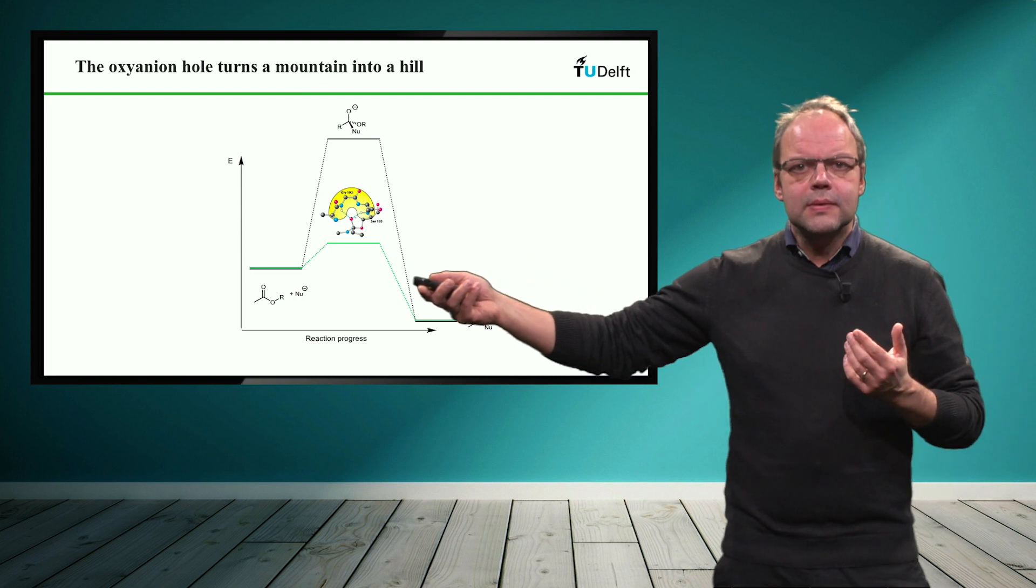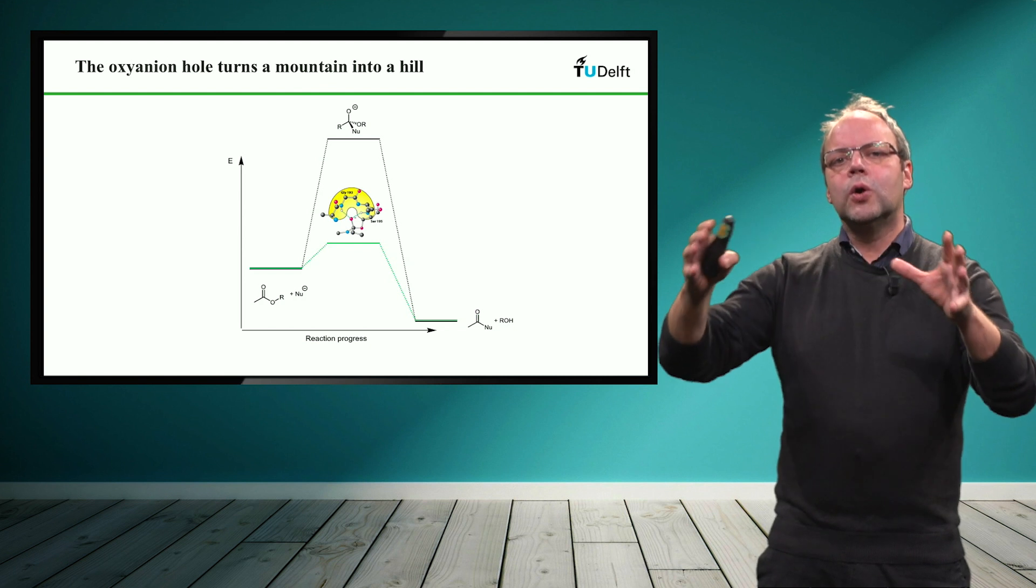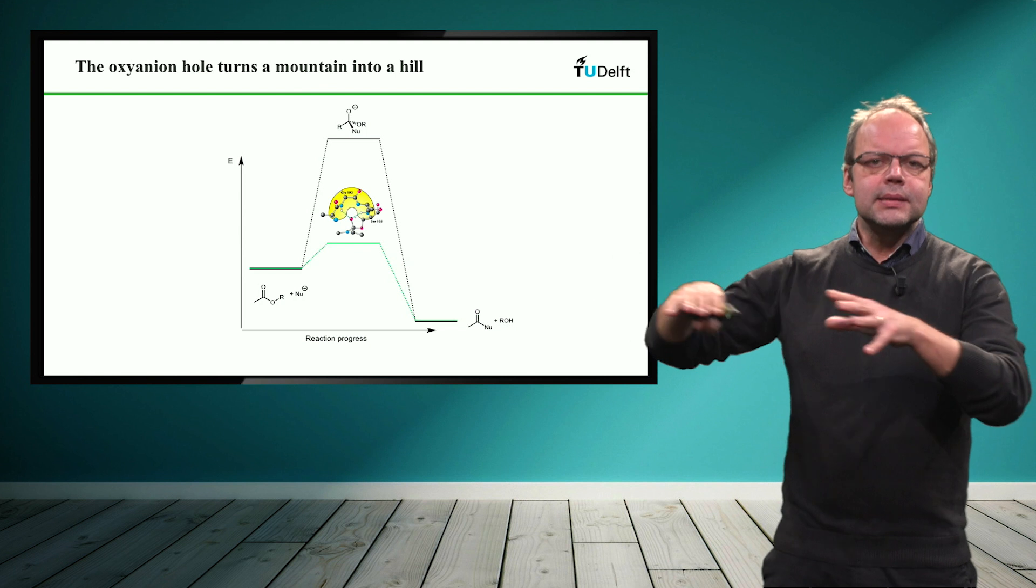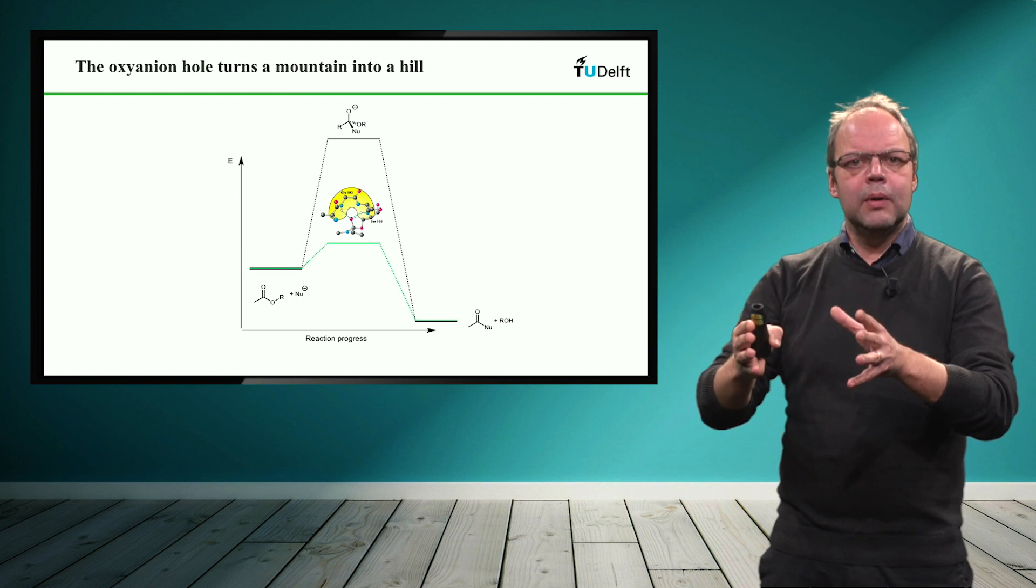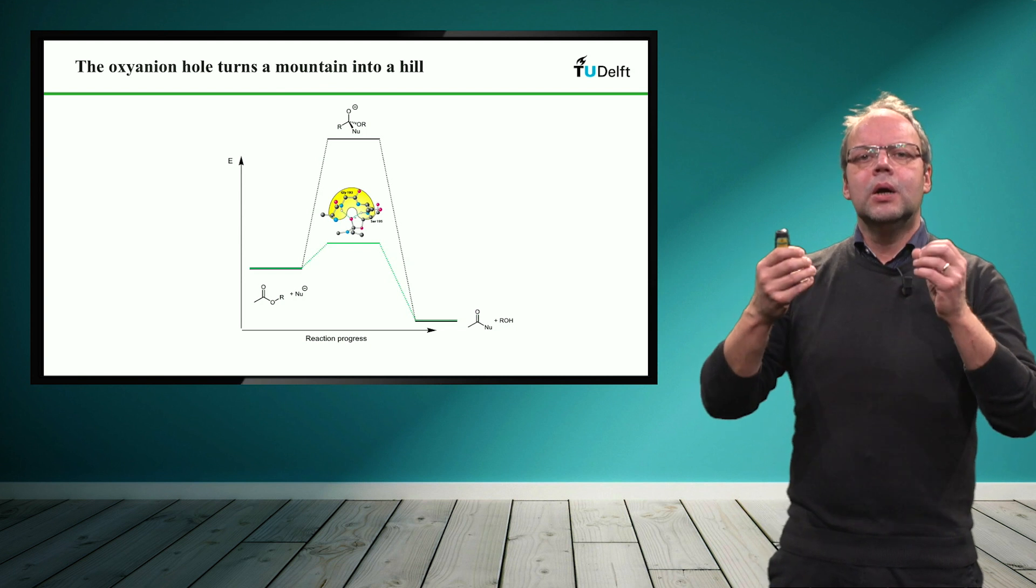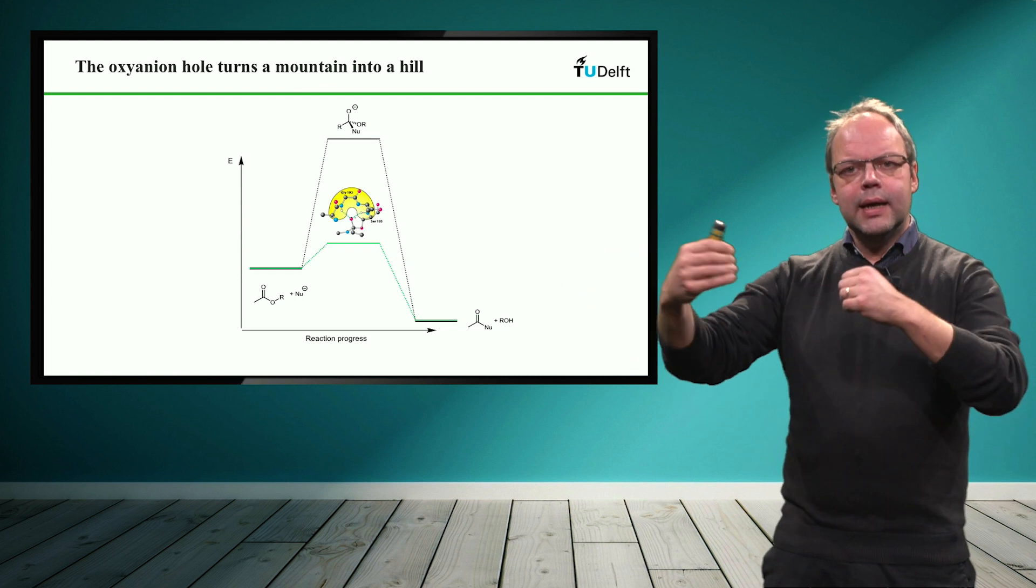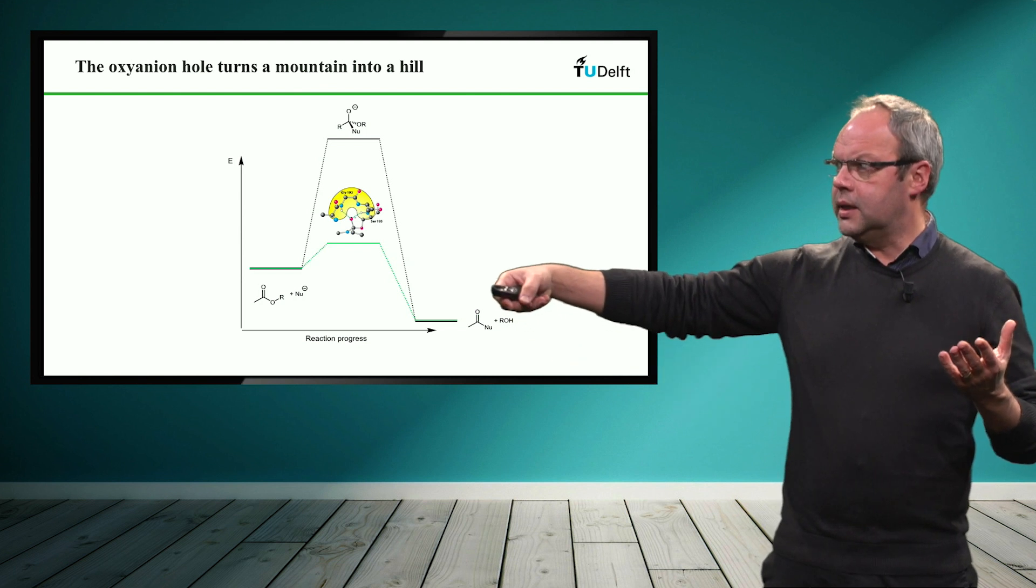And this is what the serine hydrolases actually do. They provide a so-called oxyanion hole. This you can see here in yellow. This is a region within the enzyme, very well localized, which contains a lot of positive charges, which contains hydrogen donors, which can interact with a negatively charged oxygen anion and thereby stabilize this oxygen anion.